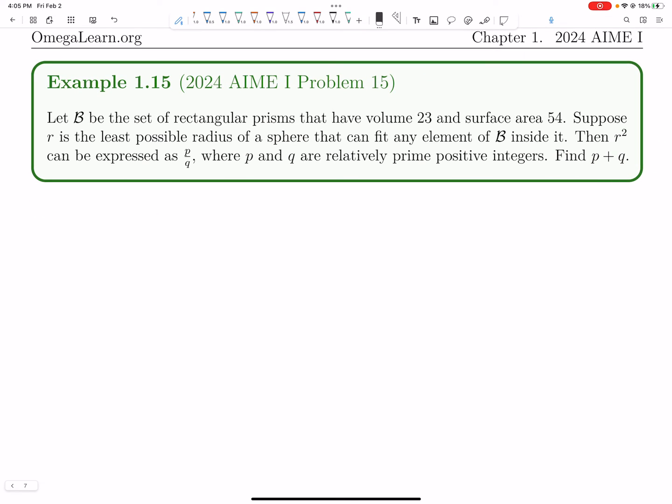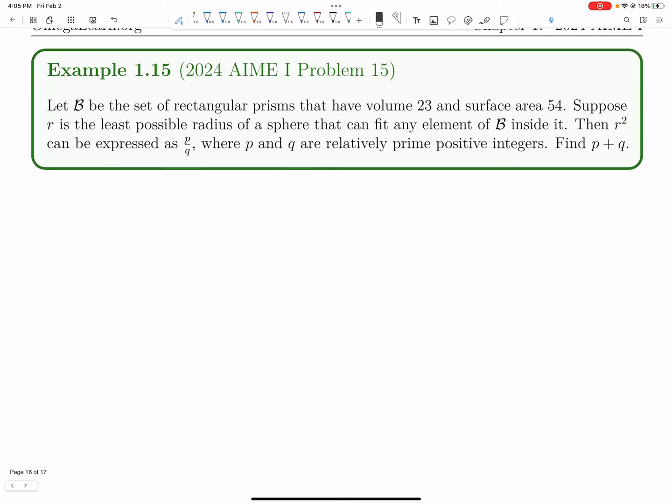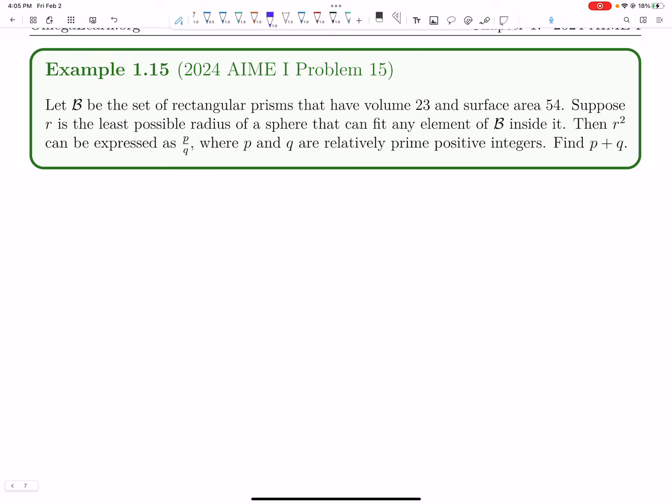Let's explore how to solve number 15 with this super short and slick solution. Let B be the set of rectangular prisms with volume 23. So if volume is 23, we just say xyz is 23.